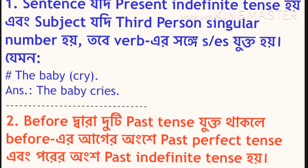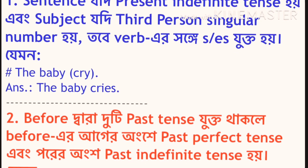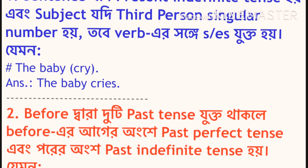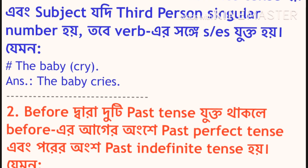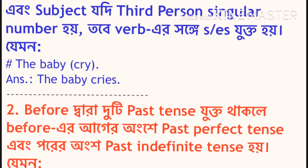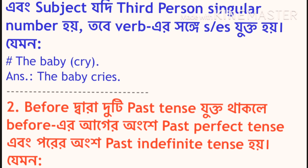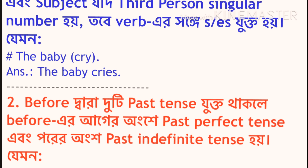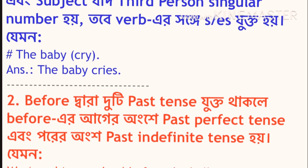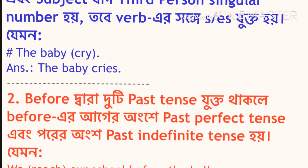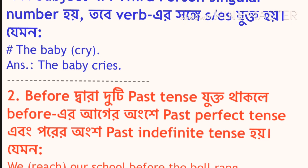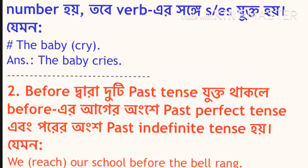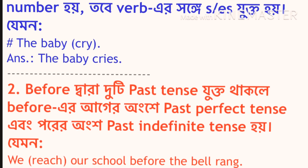If the sentence is in present tense and the subject is third person singular number, you need to add -s or -es to the verb. For example, we can see here: 'The baby cry' becomes 'The baby cries.' It will be better for every student if you give another two or three examples in the comment box — it will be very helpful for you all to practice.